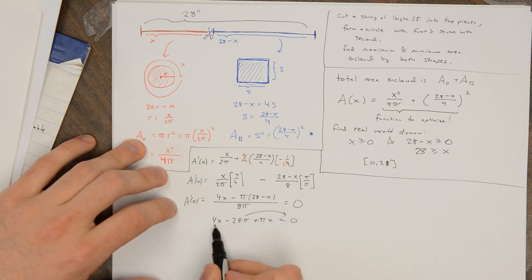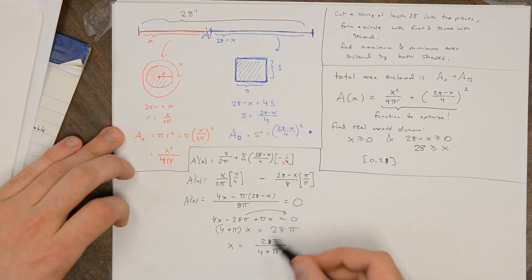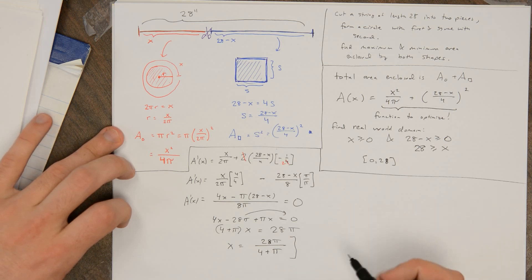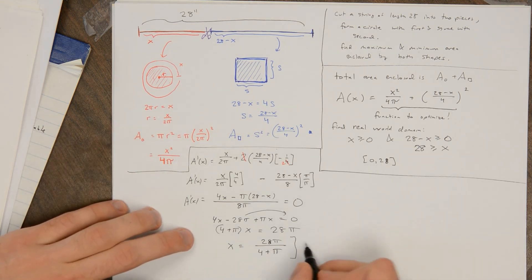So I'm going to move this over here, and this is (4 + π) times x is equal to 28π. So x is going to be 28π/(4 + π). And you can check that this is in the domain. If you plug this into a calculator, you'll see that it is somewhere between 0 and 28.